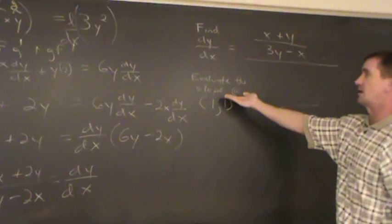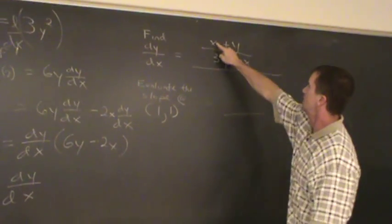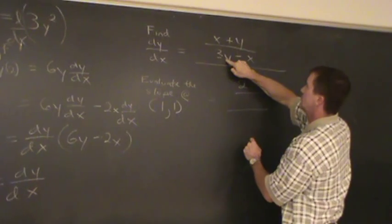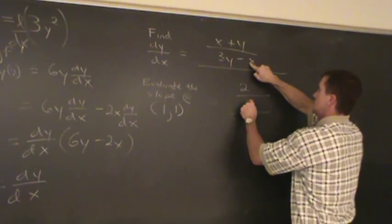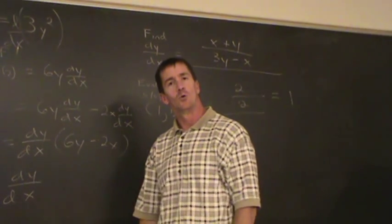Oh, and we can evaluate the slope at a point. So let's evaluate the slope of this curve at the point 1 comma 1. 1 plus 1 would give me 2. 3 times 1 is 3, minus 1 is 2. And the slope at 1 comma 1 is 1. And we're done.